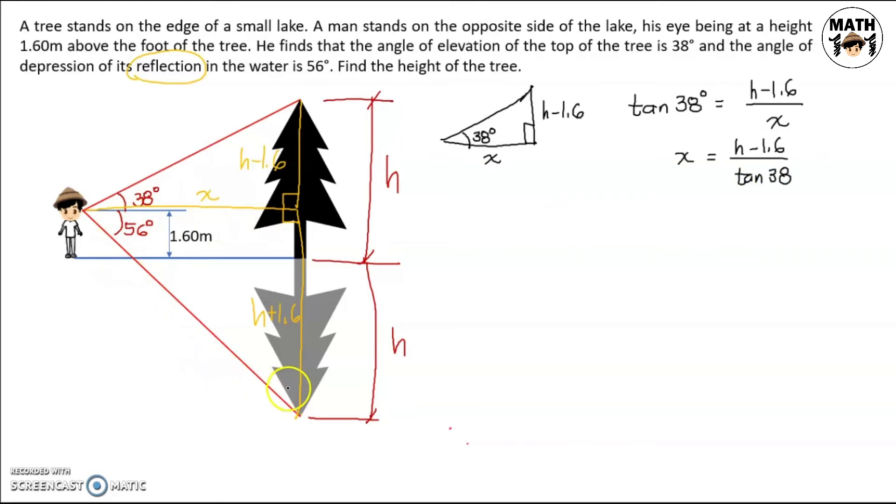Next, let's write an equation or relationship for this triangle. The angle is 56 degrees, the adjacent side is x, and the opposite side is h plus 1.6. So again using tangent, tangent of 56 degrees is equal to h plus 1.6 divided by x. And again, we can write x as the subject of the equation, so x is equal to h plus 1.6 divided by tangent of 56.